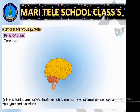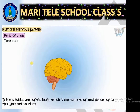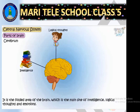These two halves are the right hemisphere and the left hemisphere. The right hemisphere controls the left part of the body, and the left hemisphere controls the right side of the body. The cerebrum has many folds, and its function is that it is the main site of intelligence, logical thoughts, and emotions.